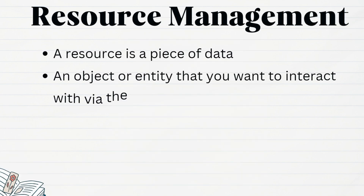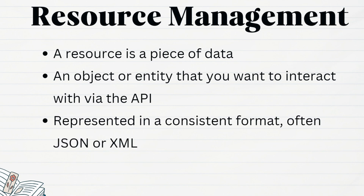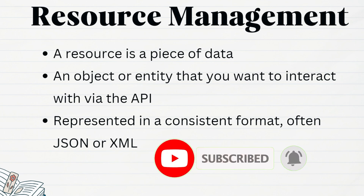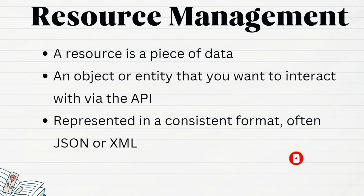We have been talking about getting, updating, or deleting a resource — but what exactly is a resource? A resource is a piece of data or a service that can be accessed over the network. It can be thought of as an object that you want to interact with via an API. In the user registration example, the resource would be the user entity which got created when we submit the form. In RESTful APIs, resources are represented in a consistent format, often using JSON or XML.